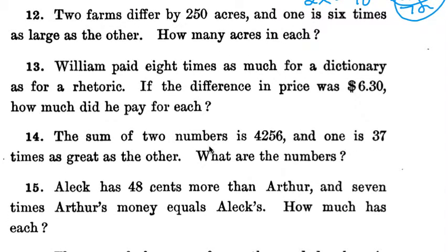Number 12: Two farms differ by 250 acres, and one is six times as large as the other. How many acres in each? The one that we know the least amount about is x, and the other one is six times, that one's pretty easy. Keyword here: differ means subtraction, and they differ by 250. So we're going to take the bigger, take away the smaller, and we're left with the difference, 250.